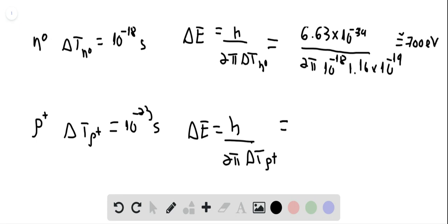And here we have the same thing, 6.63 times 10 to the minus 34 divided by 2 pi times 10 to the minus 23. So this will be higher, 1.16 times 10 to the minus 19, and this is about 70 MeV.